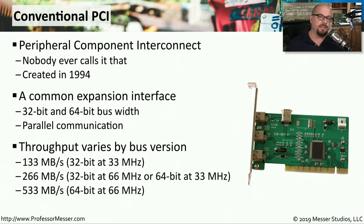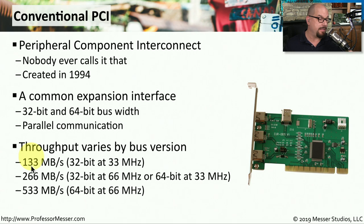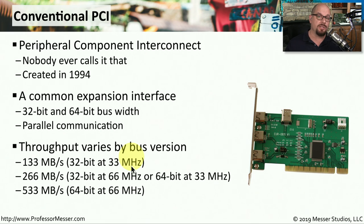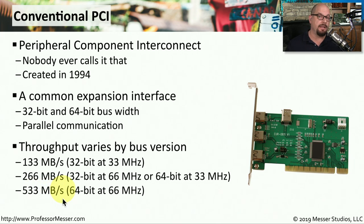There have been updates and modifications to the PCI bus interface over the years, and the total speeds will depend on what version of PCI is in use on your motherboard. For example, there are PCI standards that support 133 megabytes per second — that's a 32-bit card running at a 33 megahertz clock rate. The higher end of PCI would be a 533 megabyte per second interface, which is a 64-bit interface running at 66 megahertz.